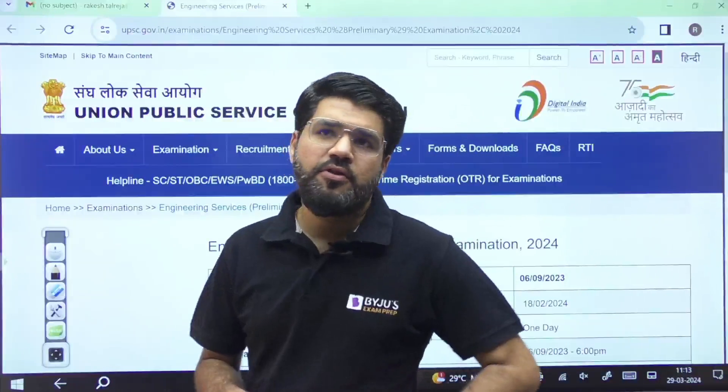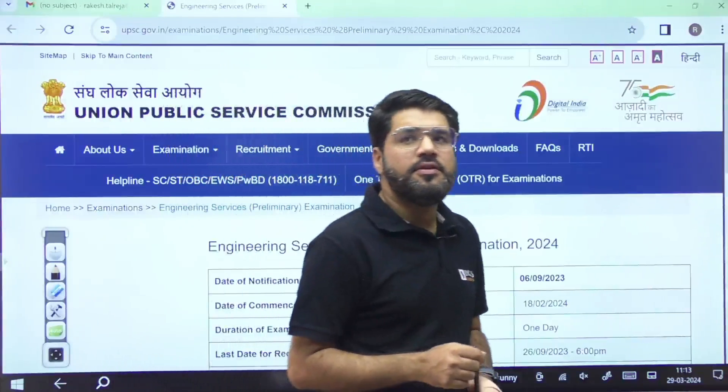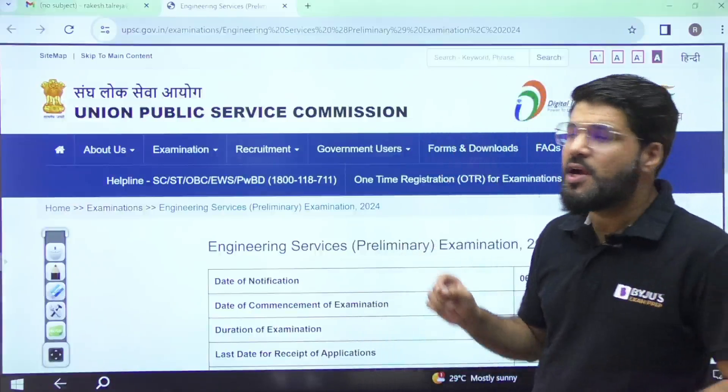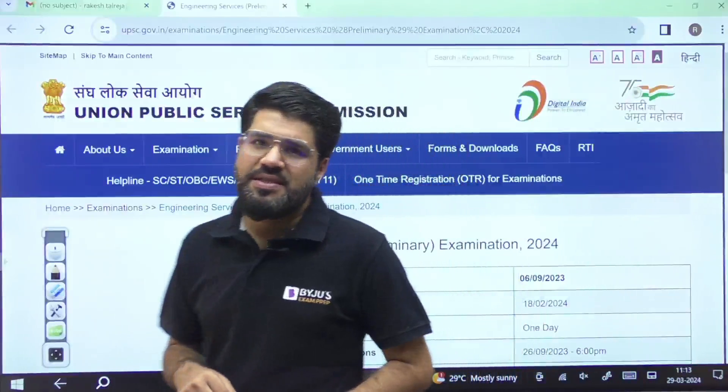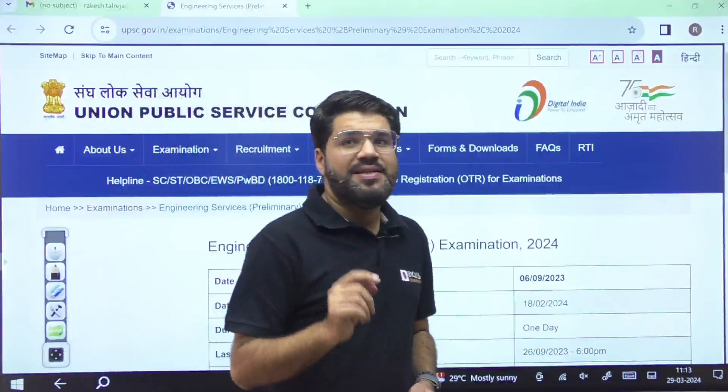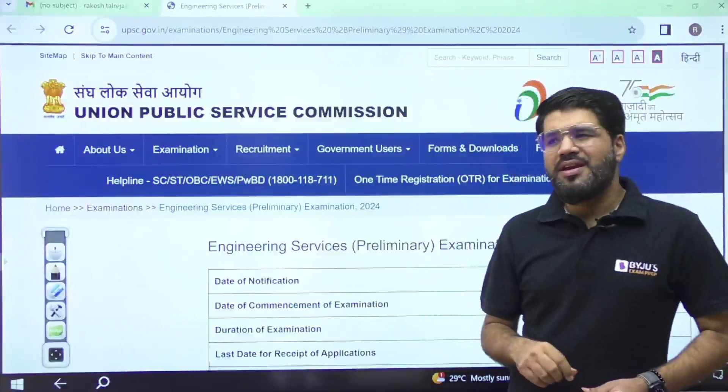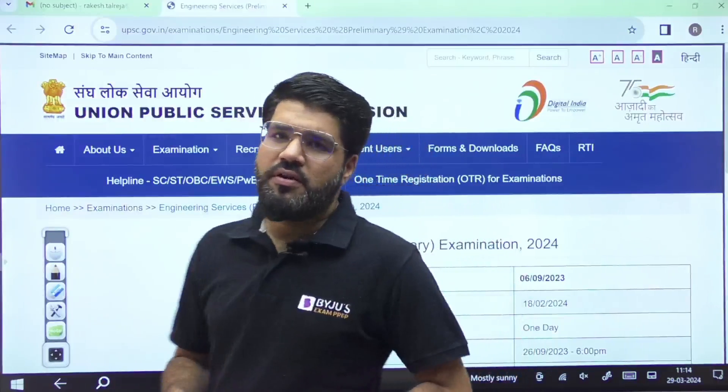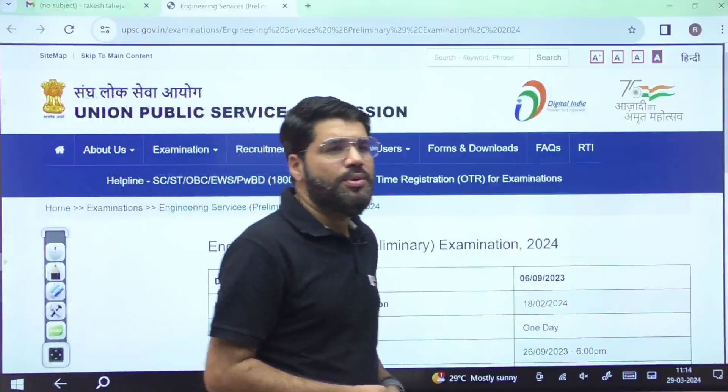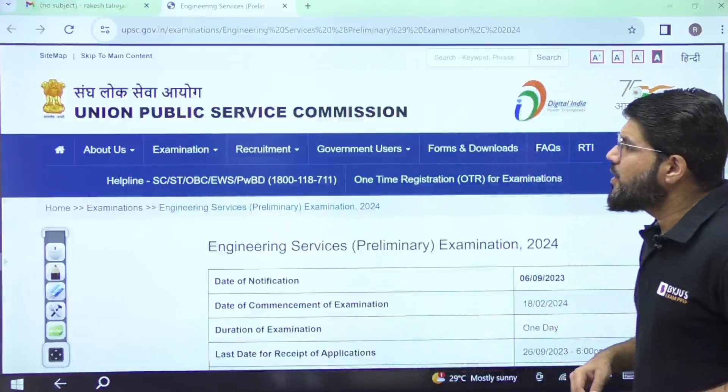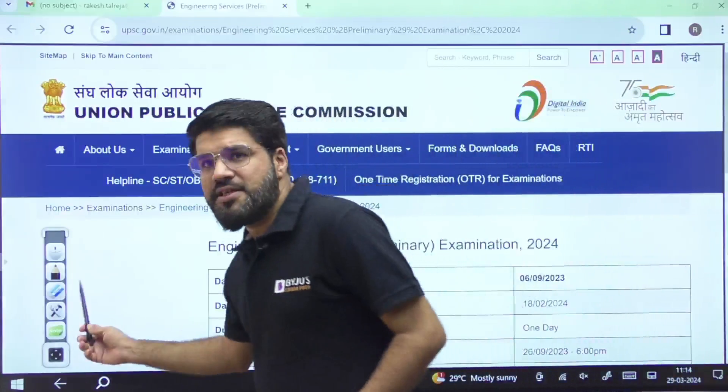Hi students. Yesterday, March 28th, the UPSC Engineering Services Prelims examination results were declared. The exam was conducted on the third Sunday of February, that is February 18th. Usually after March 15th you can expect the prelims results. First, let me tell you the statistics and then we'll look at the result sheet.